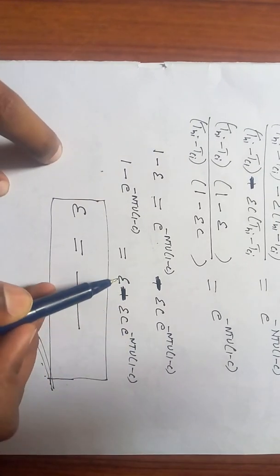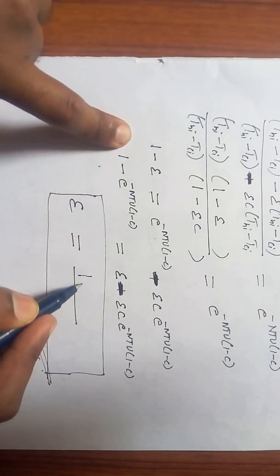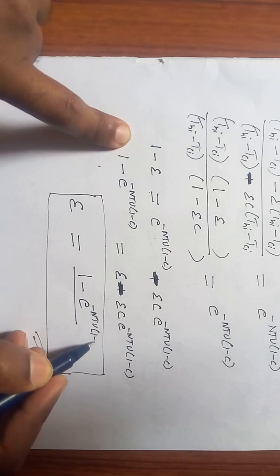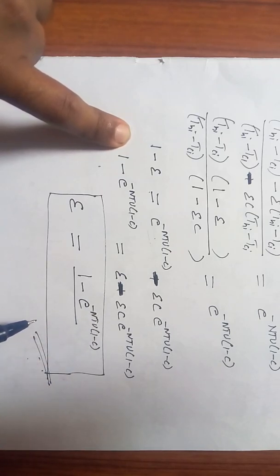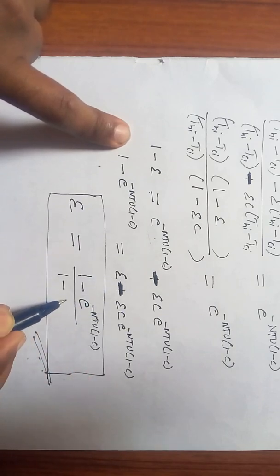Now taking epsilon as common factor on the LHS, this part remains the same: 1 minus e to the power minus NTU times (1 minus C). And here taking epsilon as common factor on LHS, I will get 1 minus C. Taking epsilon as common factor.